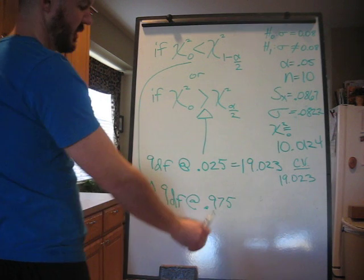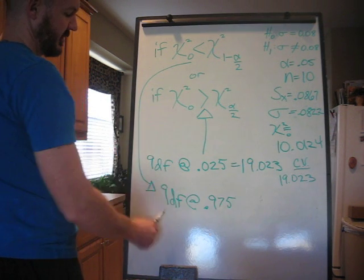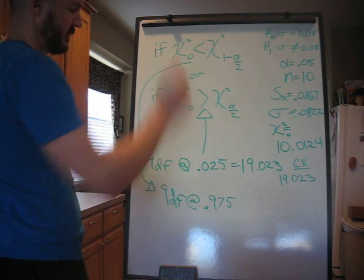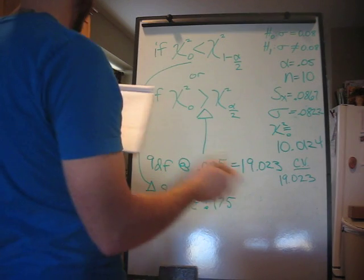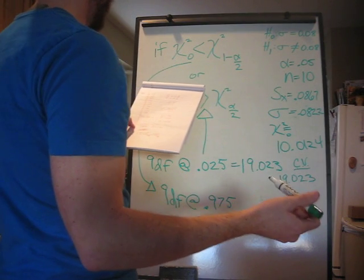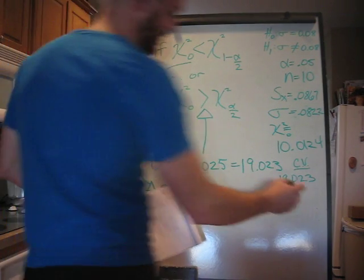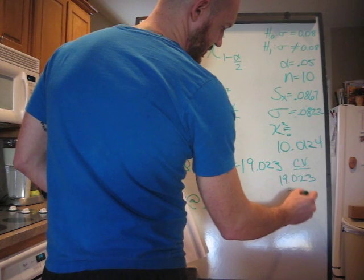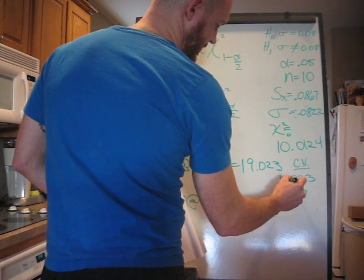1 minus 0.025, 0.975. Go to 9 degrees of freedom on the left. 0.975 on the top. They meet at 2.7. Those are our two critical values.